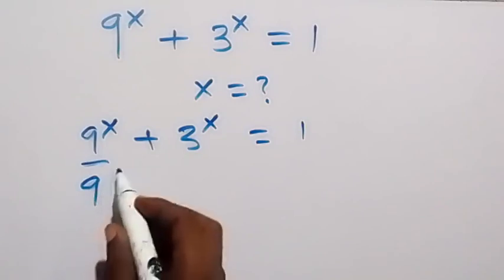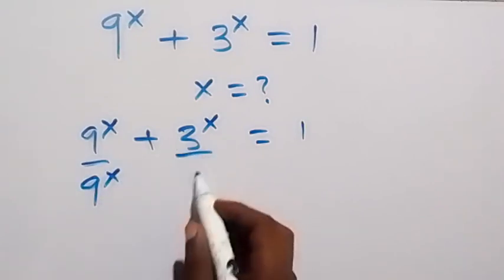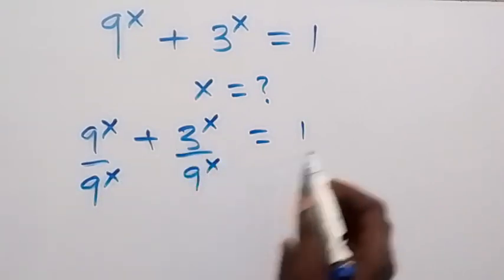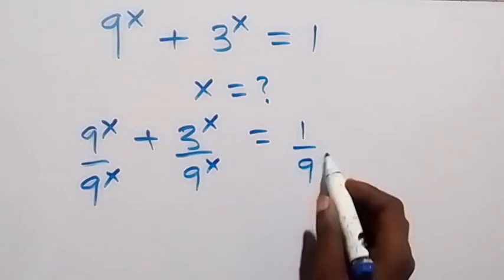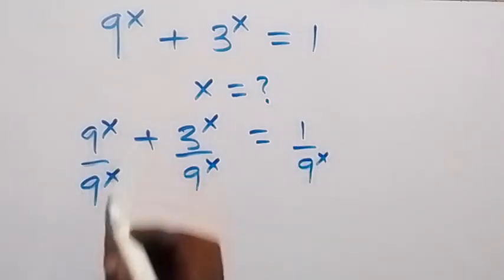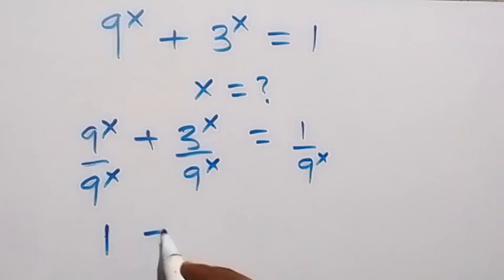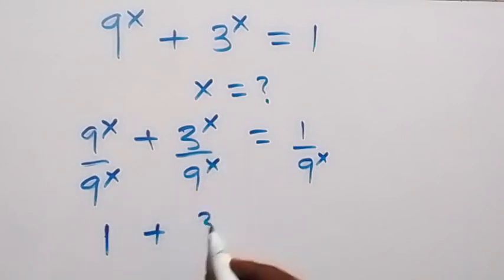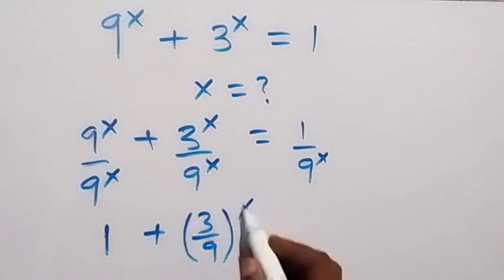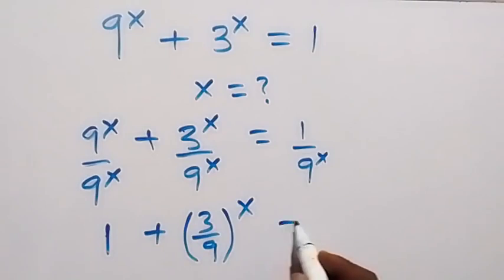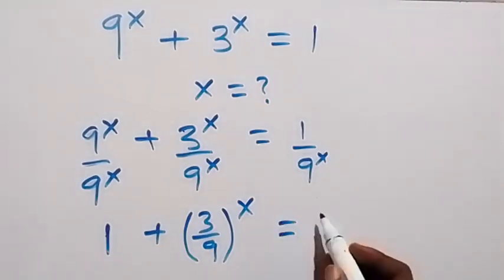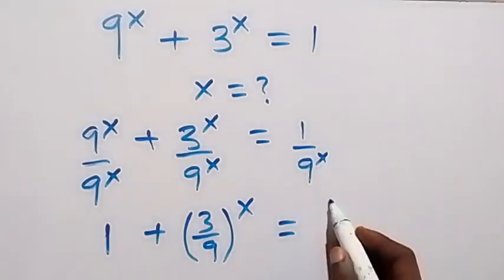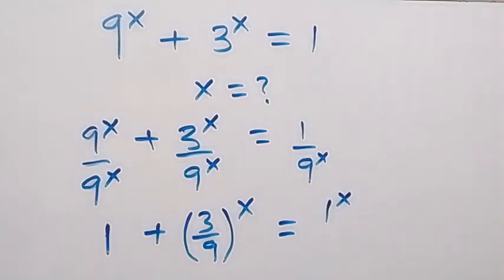Dividing each term by 9^x: the first term cancels to remain 1, then we can take the power out and write the second term as (3/9) raised to power x, and the right side becomes 1 raised to power x, which is just 1, over 9^x.